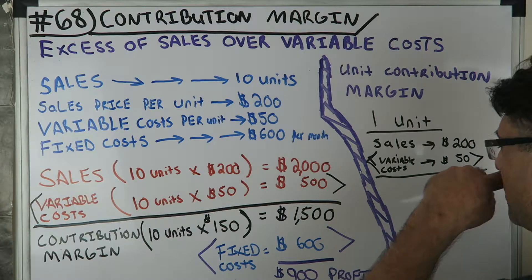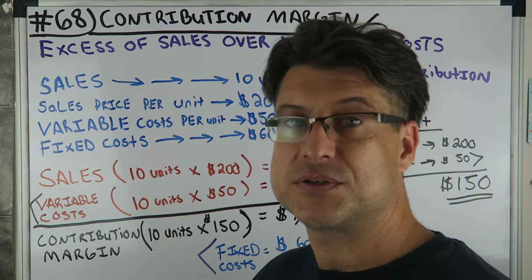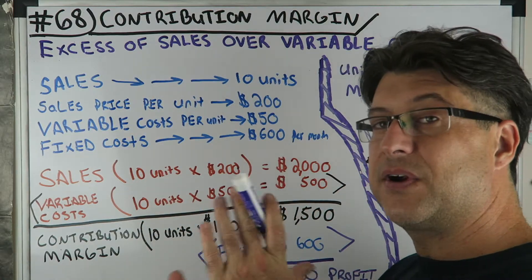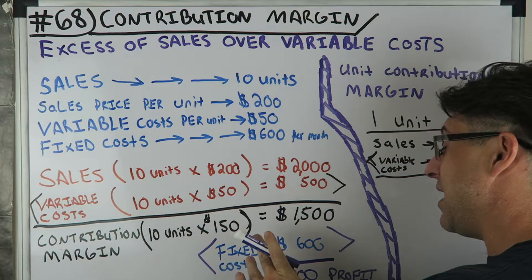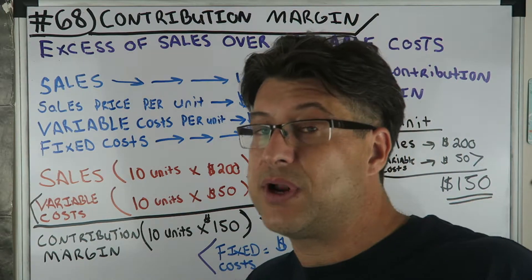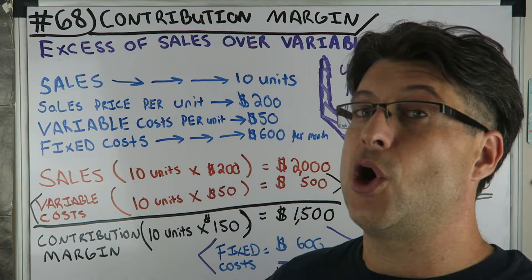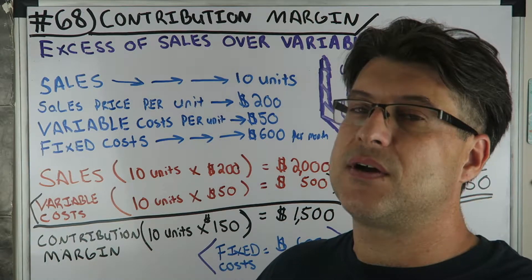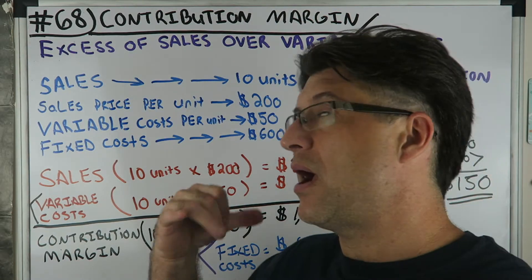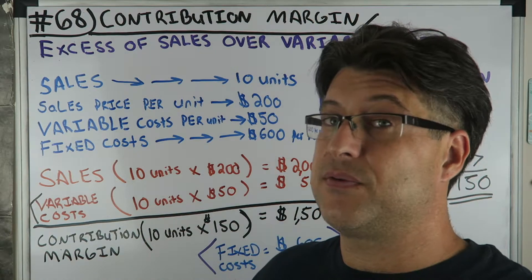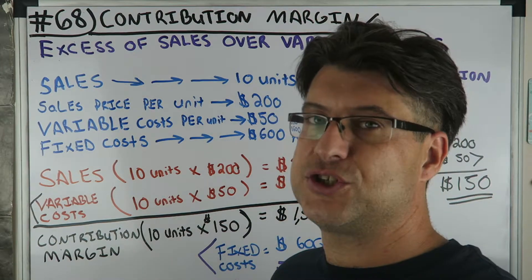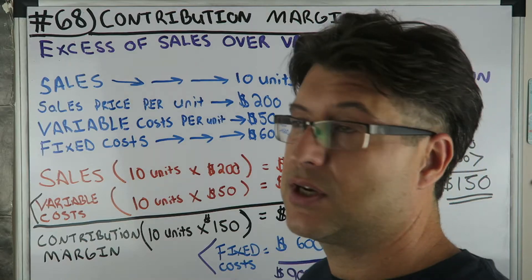Once we figure out that our contribution margin is $150, that means every time we sell one unit — every time we do one tax return — we're making $150. Fixed cost is $600, so that's what we need to cover. From the contribution margin you can find your breakeven point, set a profit target, and all kinds of formulas and ratios are derived from it. That's why I picked this topic right after fixed and variable costs.